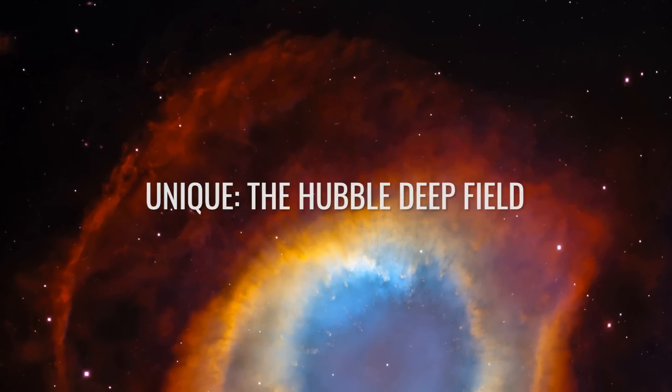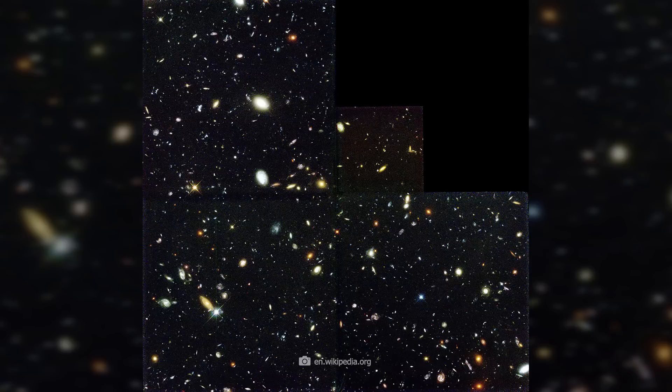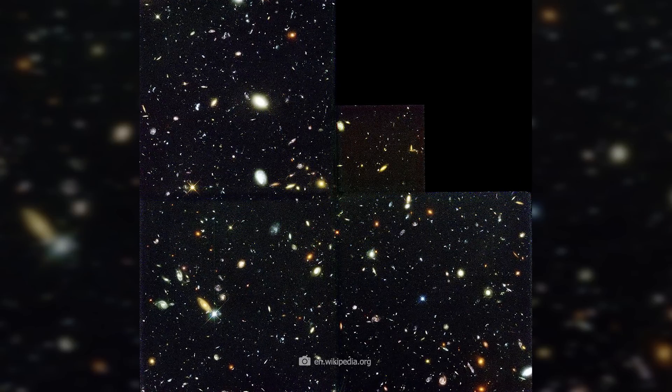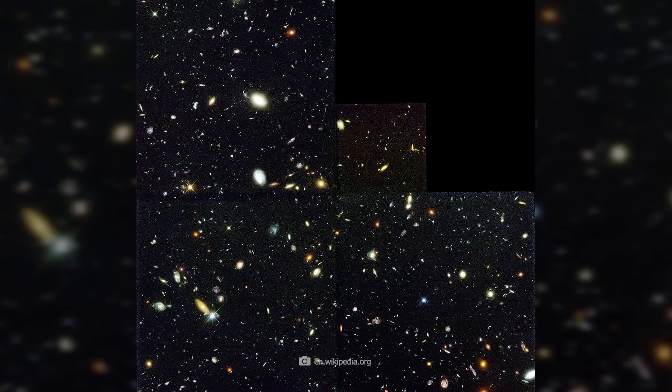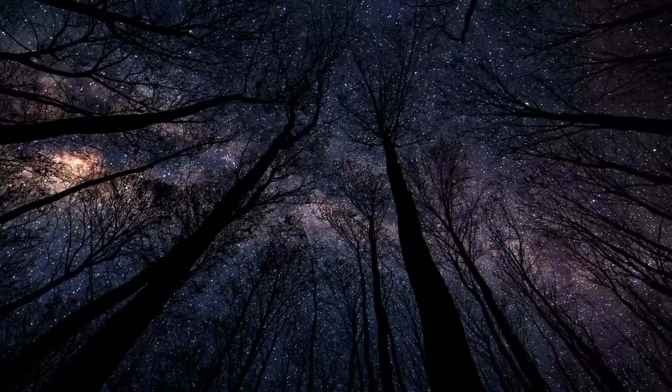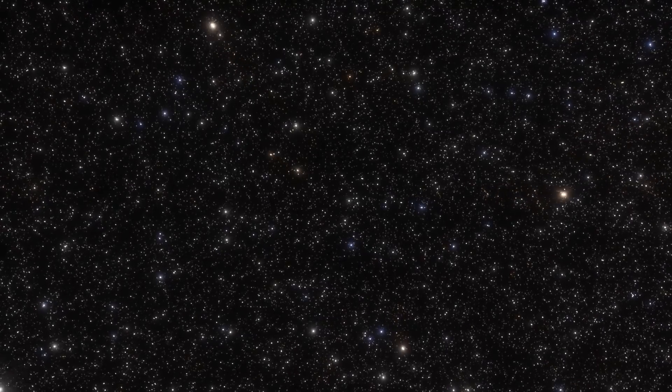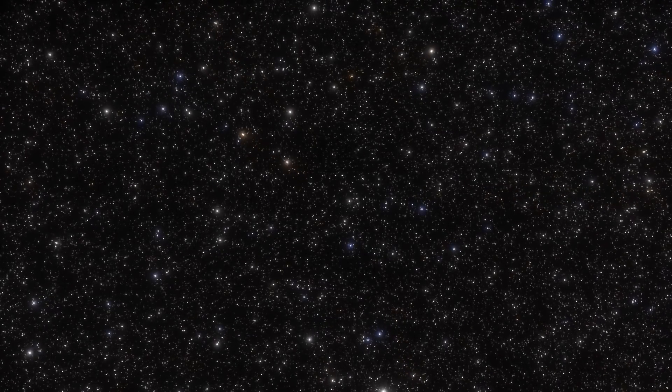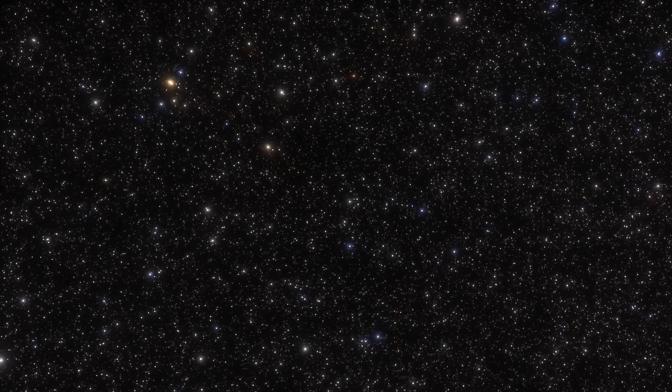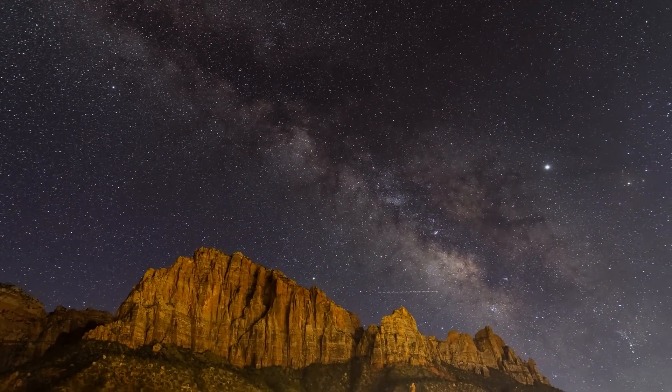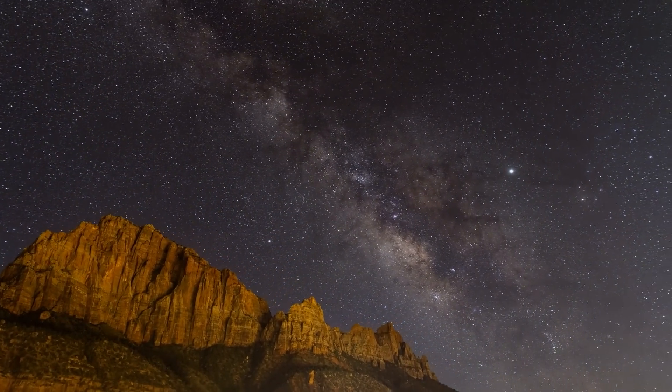The Hubble Deep Field is probably the most remarkable story of what the project was not designed for. In December 1995, an American researcher named Robert Williams was granted valuable observation time of the telescope for himself and his work. And what did Robert Williams do with his time? He had the telescope pointed at an almost empty area in the sky for days. The astronomical community declared Williams mad and protested.